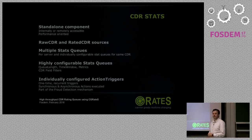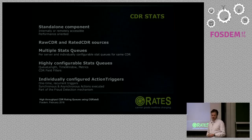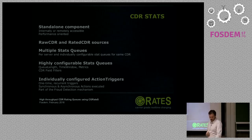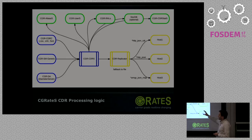There is another useful component for CDRs: CDR stats, which calculates statistics in real time — ASR, ACD, PDD, and average call cost for the CDRs in our queues. These queues are very performant as they are in-memory, so you can throw heavy traffic at them. They have a lot of configuration parameters and can also be part of fraud detection — you can monitor stats of your customers.